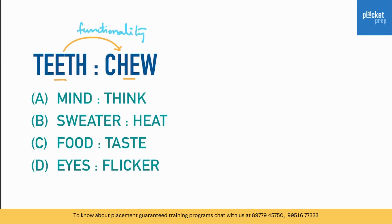Teeth, Chew — here the relation is functionality. Teeth are used for chewing. Now in the options we have: mind/think, sweater/heat, foot/taste, eyes/flicker. The most appropriate is mind/think, because we use the mind to think.